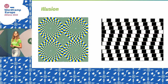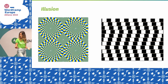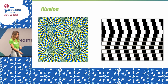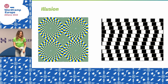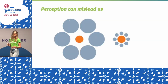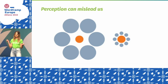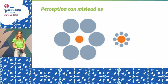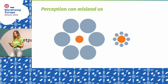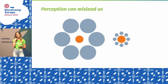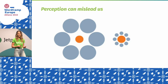If you look at this picture, the green one appears to be moving a little bit — but it's just an illusion. Our perceptions can mislead us sometimes. The orange dots are also the same size. That was also unbelievable to me.